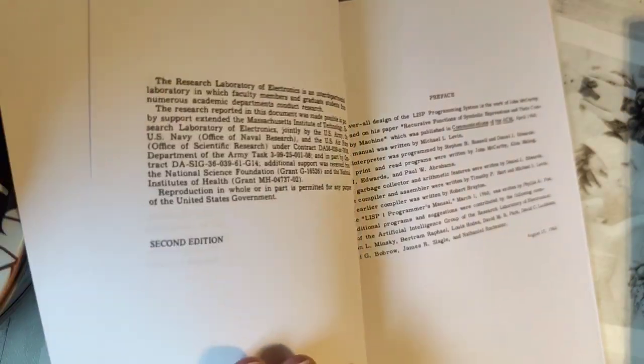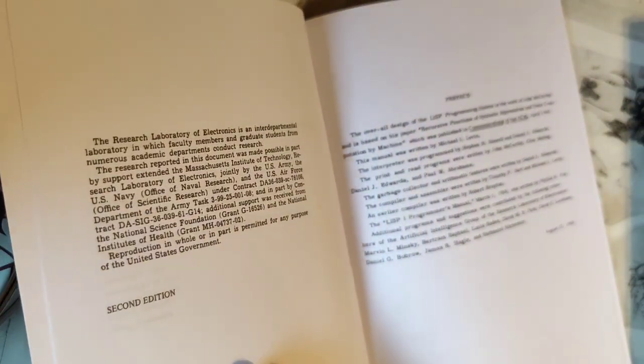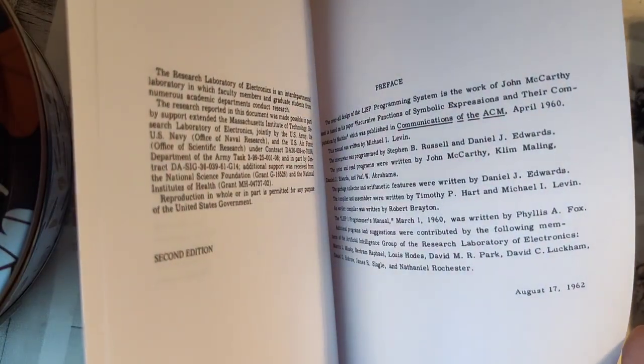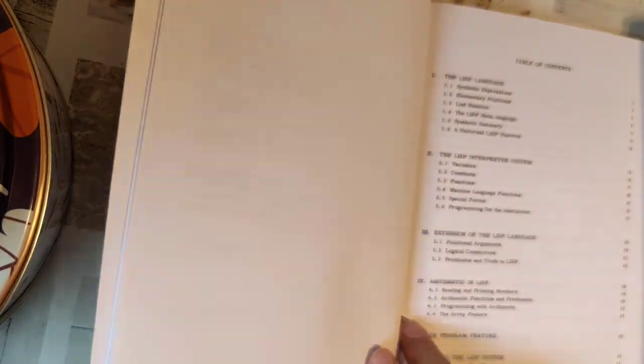The LISP 1.5 Programmer's Manual from the Massachusetts Institute of Technology created by John McCarthy at ALIE in 1962. So you can say that this is as close to original LISP as it is reasonably possible. This is August 1962.